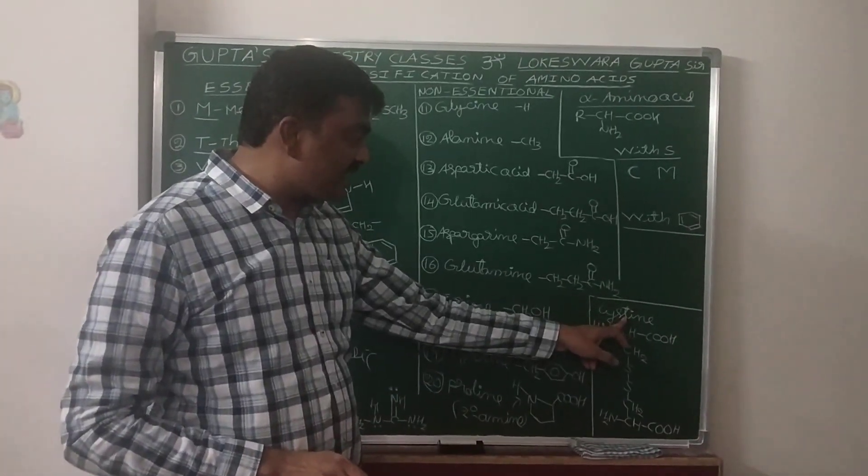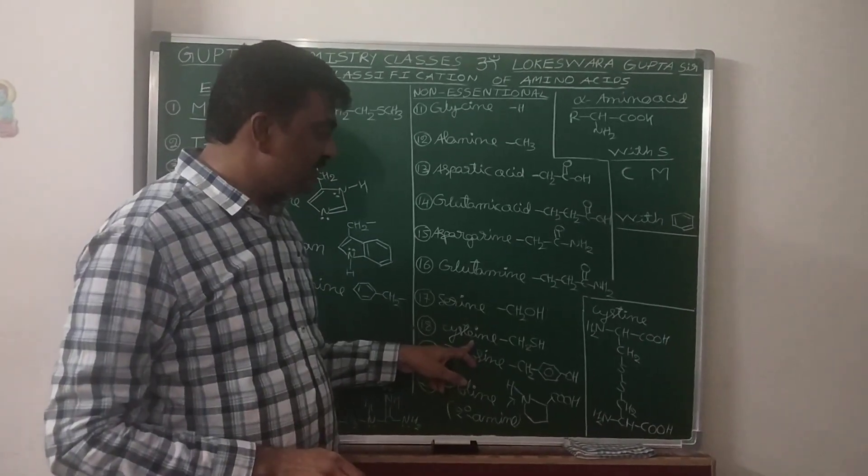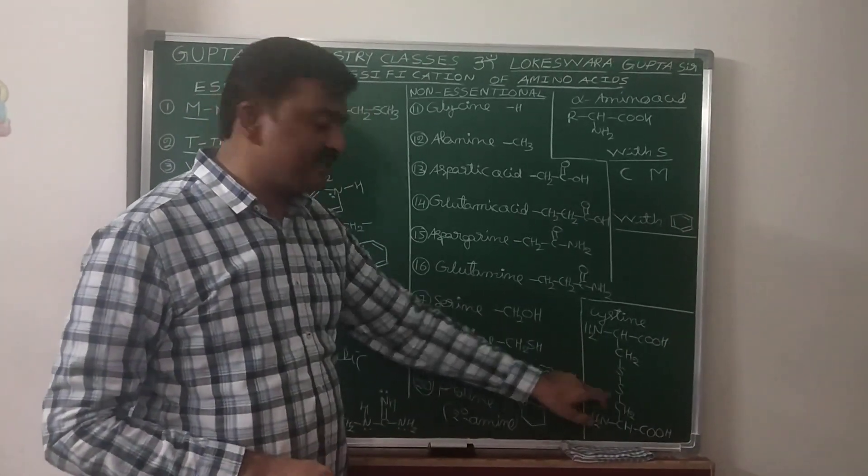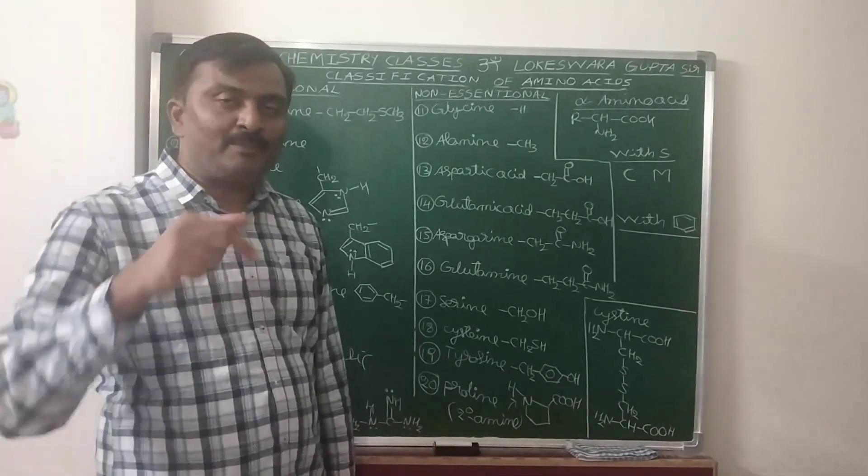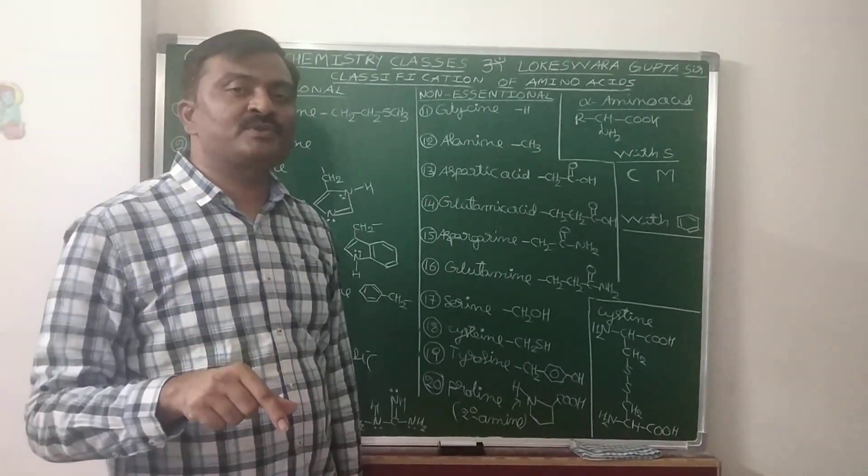It is the dimer. Cystine is the dimer of Cysteine with this SS linkage. Now it is the previous advanced. Among the following which amino acid possesses sulfur?